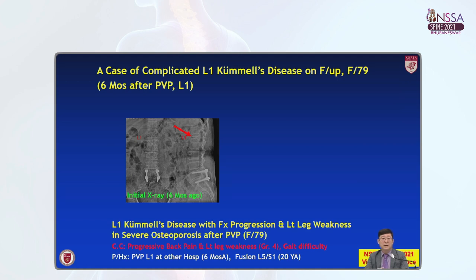Let's talk about a typical case of complicated Kummel disease on lumbar, first lumbar. This patient, aged 79, female, went to vertebroplasty at L1 six months ago in another hospital. As you can see in this initial x-ray, the L1 compression fracture is seen. But after six months, the patient presented to me for progressive back pain, left leg weakness of grade 4, and gait difficulty.